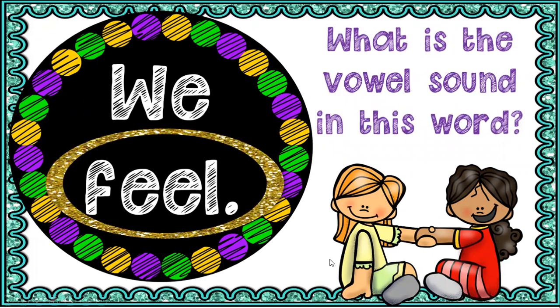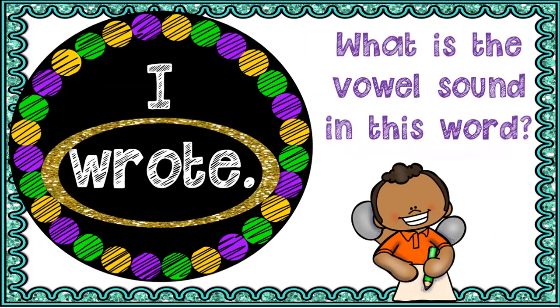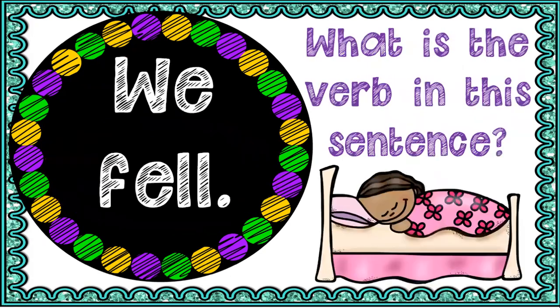Your vowel sound in 'feel' is 'e.' Next — 'I wrote.' What's your verb? Your verb is 'wrote.' What's your vowel sound in 'wrote'? You hear the 'o,' right? Your 'e' is that sneaky or tricky 'e,' and you don't hear that 'e' sound — it makes the 'o' say its name.